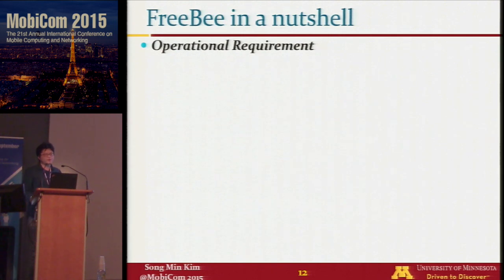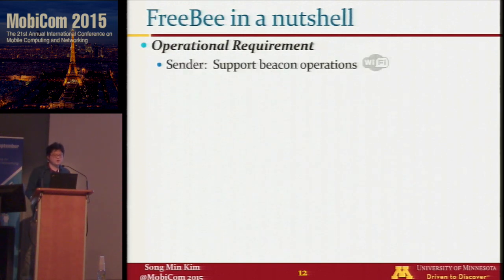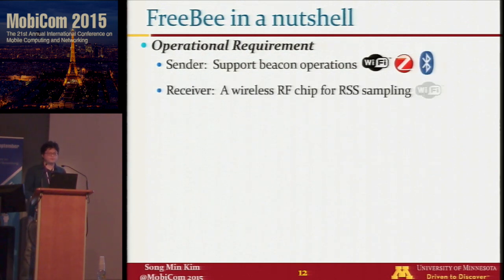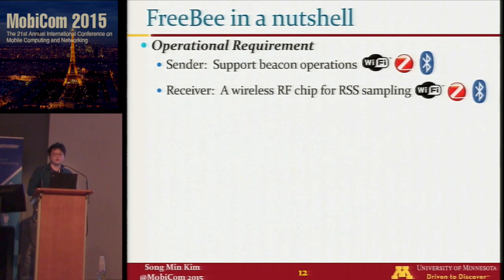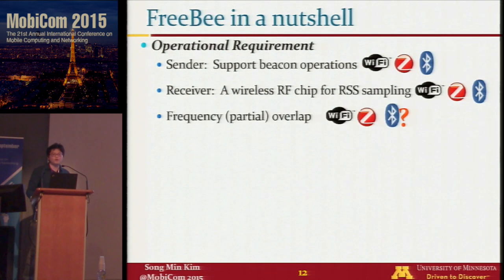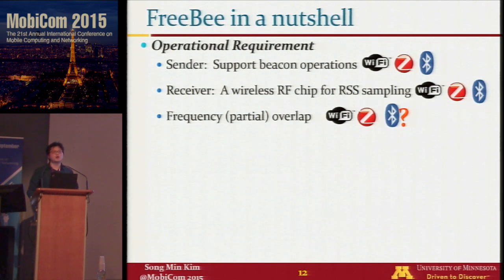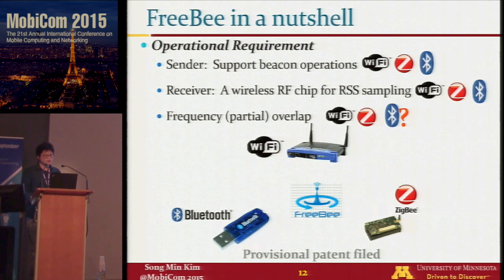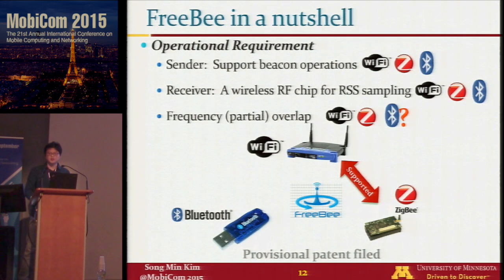Moving on to the design of Freebie, we start with operational requirements. The sender must support beacon operations, which is common in all three technologies. The receiver must have an RF chip for RSS sampling, also common in all technologies. There must be frequency overlap between sender and receiver — common for WiFi and ZigBee, but only partially true for Bluetooth due to its frequency hopping mechanism. Therefore, Freebie allows bidirectional communication between WiFi and ZigBee, and unidirectional communication from Bluetooth to WiFi and ZigBee.